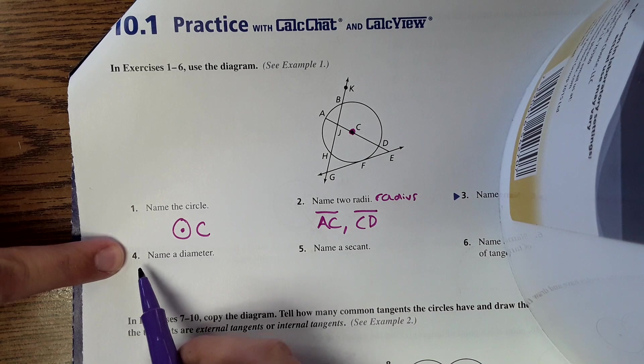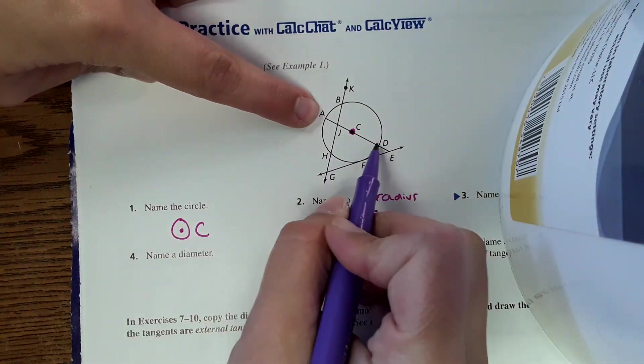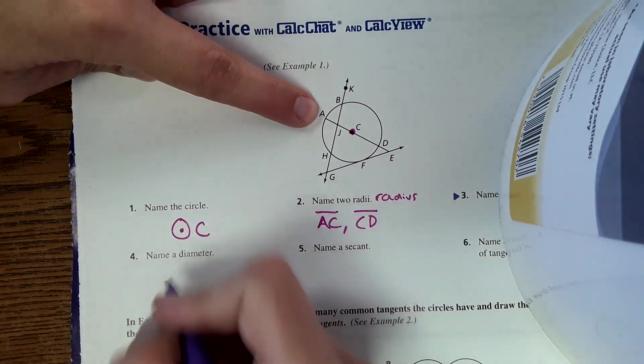While we're on things we know, next it says name a diameter. Diameter is all the way across the circle through the center. So it would be segment AD.